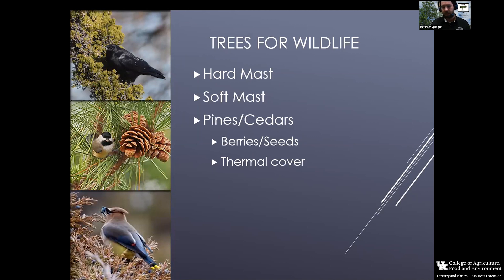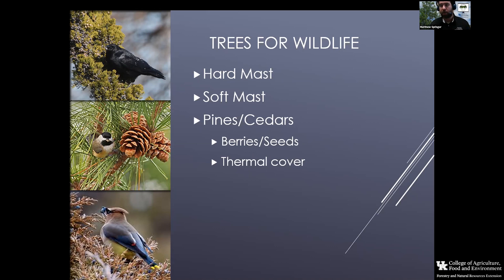The last big group of trees to touch on are those providing thermal cover — pines and cedars — which provide a significant benefit especially during winter storms. When growing together, they can shelter animals from high winds, rain, and snow events, so we see a lot of use of cedar thickets during extreme weather. Some species will also readily consume the soft mast produced by these trees, as well as seeds from pine cones. They are uniquely beneficial in ways that hardwoods are not in winter, so it's always good to have a few bunched together to get that thermal benefit.